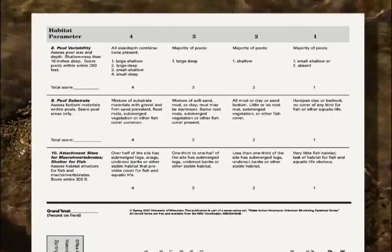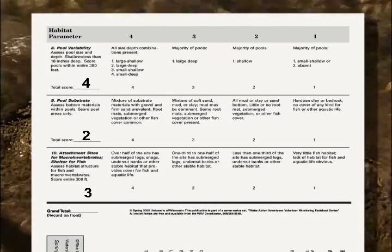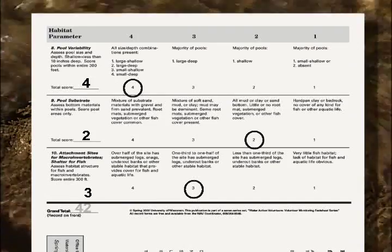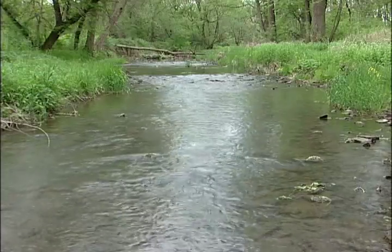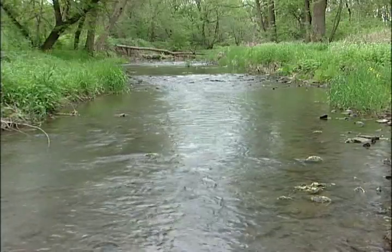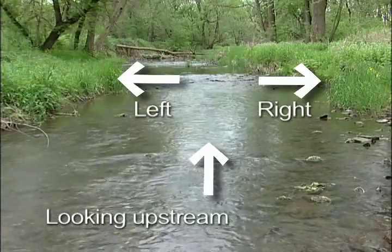For each question, you will assign a score of 1 to 4 to the stream habitat characteristic being assessed. Circle the appropriate value as you work through the data sheet, then tally the scores once you have answered all the questions. For several of the questions, you'll be asked to assess habitat on the right and left sides of the stream. For WAVE's habitat assessment, the right side of the river is on the side that is on your right when you are facing upstream, basically because that's how fish orient themselves in the stream.